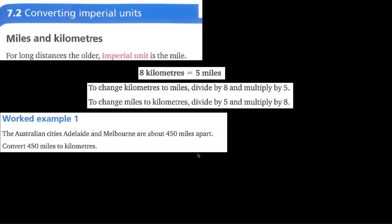Hi dear students, this is the second video about converting units. We are going to convert imperial units like kilometers or gallons to liters, commonly used in the United States or United Kingdom. Here are some conversion methods: 8 kilometers is equal to 5 miles, and we are going to use this kind of ratio for solving these types of questions.